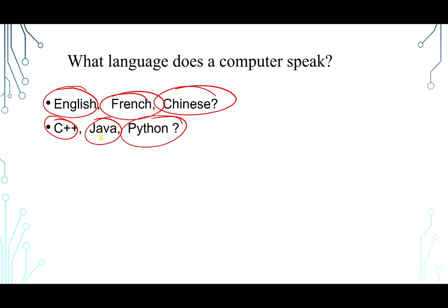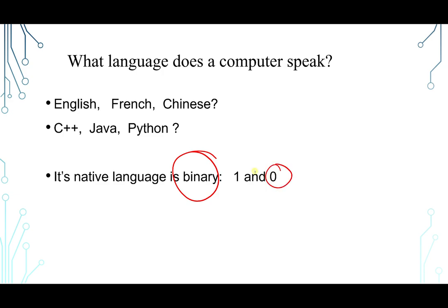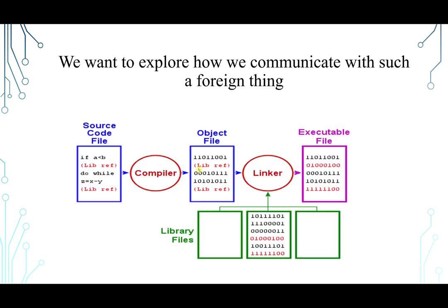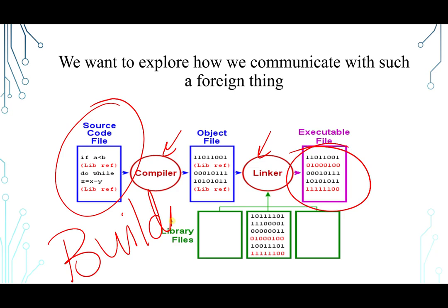Now the answer to that is none of these. It's binary, zeros and ones. So we want to explore how we communicate with such a foreign thing. When we say zeros and ones, basically I'm not going to code or program having a bunch of zeros and ones. So basically what I want is a source code which is going to be in plain English that I can understand, and I need some tools to convert that eventually to zeros and ones, to a binary file. What we call this process is the build process.